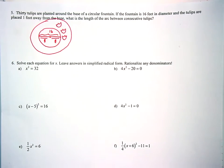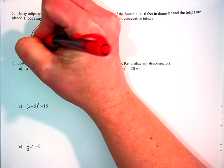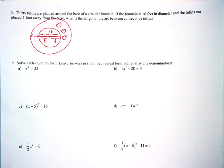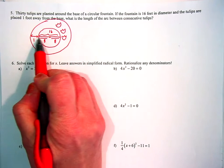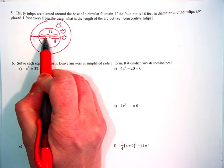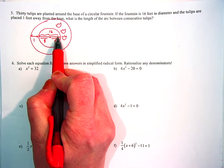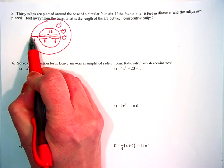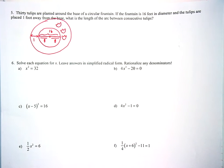So here we know that that's an extra one foot. Here, one foot. So again, let me just backtrack. 30 tulips are planted around the base of a circular fountain. If the fountain is 16 feet in diameter, so here's the fountain itself with 16 feet in diameter, and the tulips are placed one foot away from the base, so an extra one foot out like that, what is the length of the arc between the consecutive tulips?